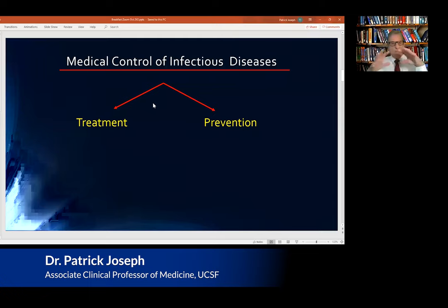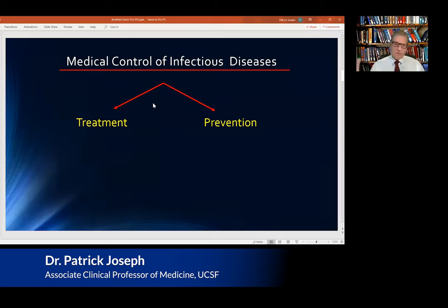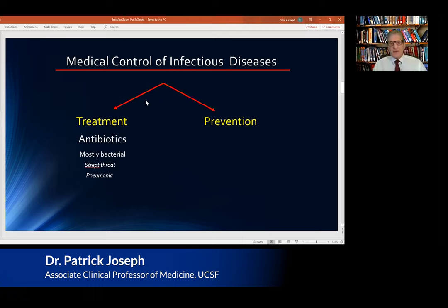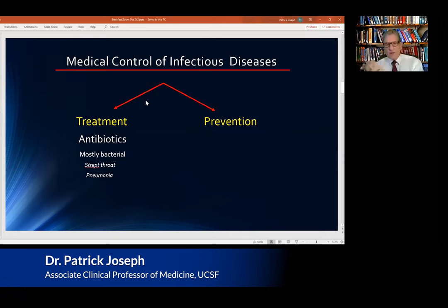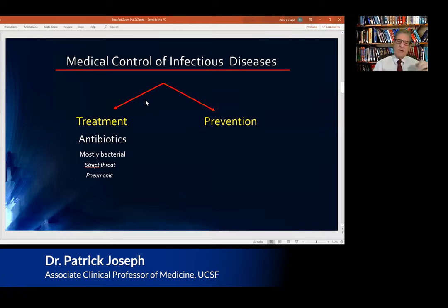There are two big factors of how we control infectious diseases in the modern era: treatment and prevention. Treatment is basically for bacterial diseases — we have many antibiotics such as penicillin for strep throat, multiple drugs for pneumonia, and a plethora of antibiotics for urinary tract infections. Treatment generally applies after a person gets a bacterial infection.